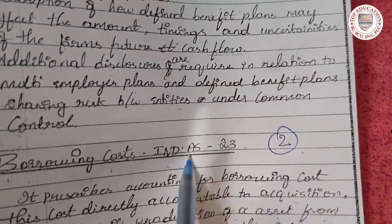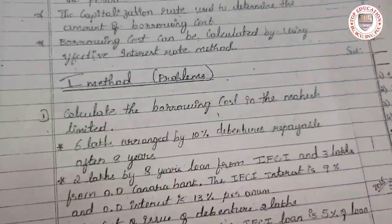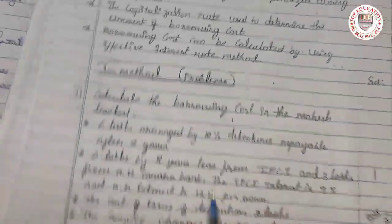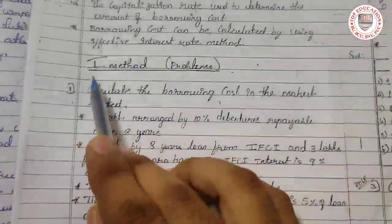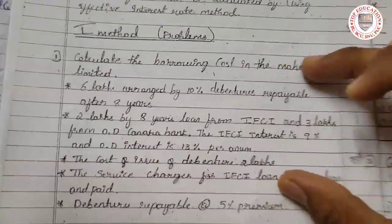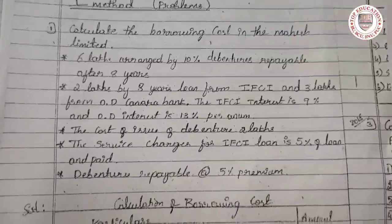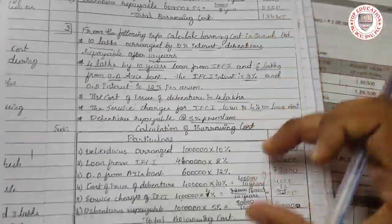This borrowing cost topic falls under IND AS 23. So if they ask you to solve a problem according to IND AS 23, you have to do the borrowing cost sum. Now let's move on to the sums, which will help you in the examination. We have the first method here. Let's understand the calculation first and then do the sum. I have the question and answer together here.